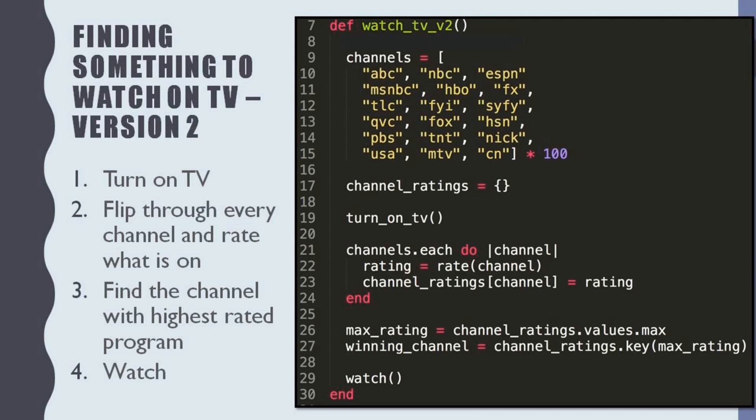And here is our list of TV channels. ABC, NBC, ESPN and etc. And then we are defining another list for the channel ratings. It is an empty list. In the process, we input the ratings of the programs. And the first step is turn on the TV. We are calling that method.